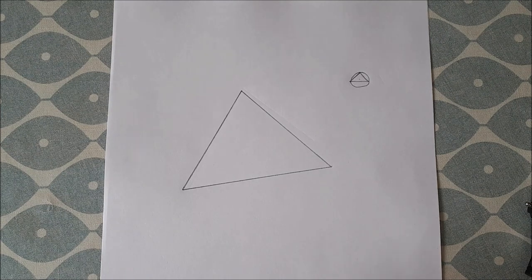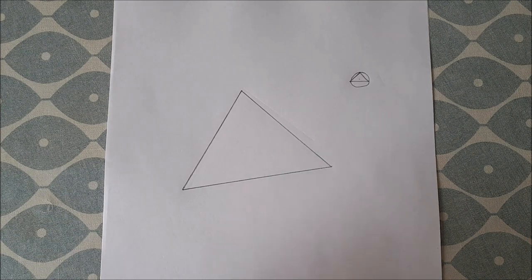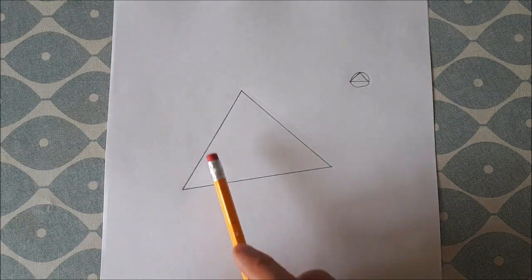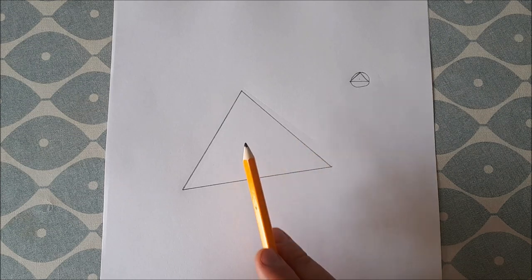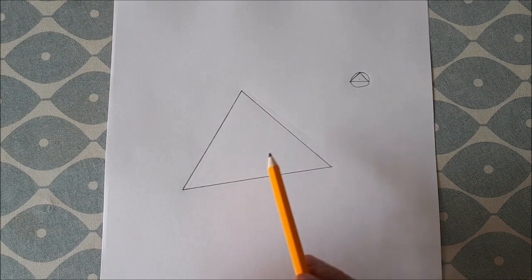In order to do this, we bisect two of the sides of the triangle, draw the perpendicular bisectors, and where they intersect, that will be the circumcenter. Then we can draw our circumcircle from there.